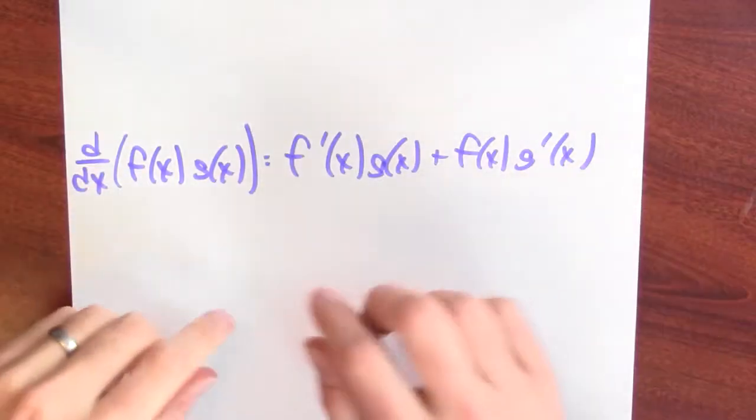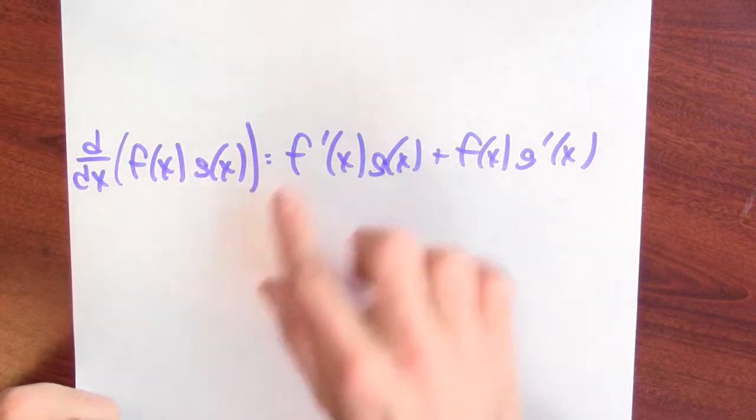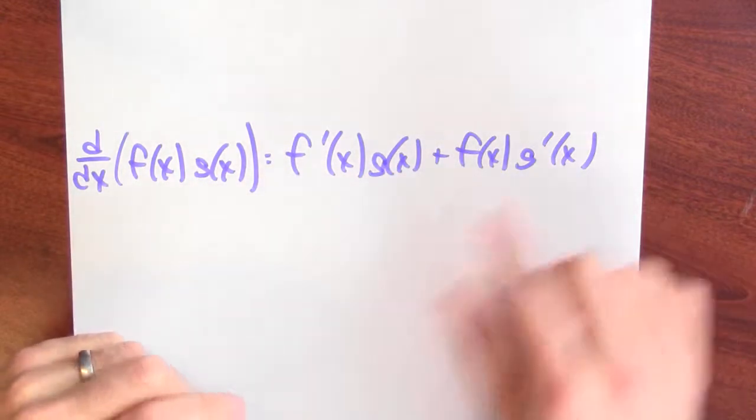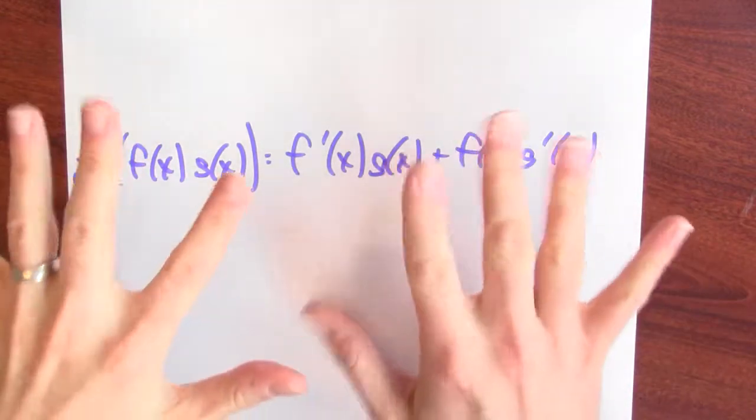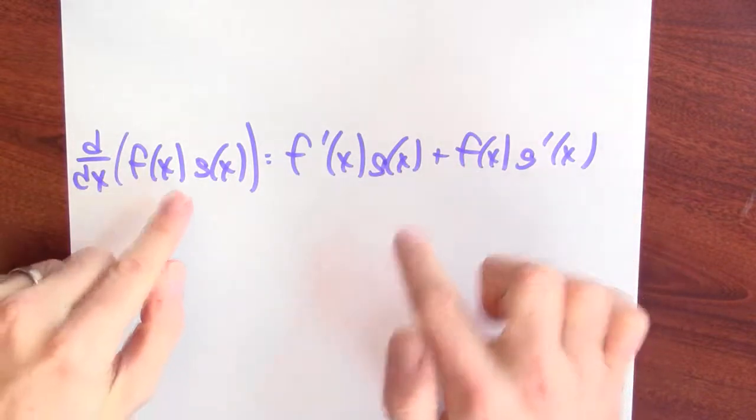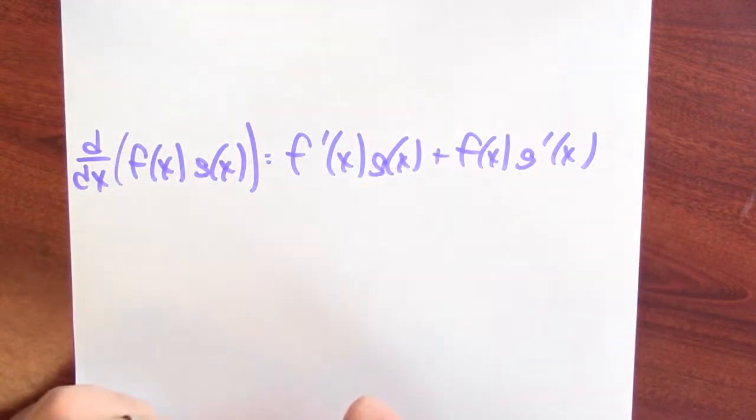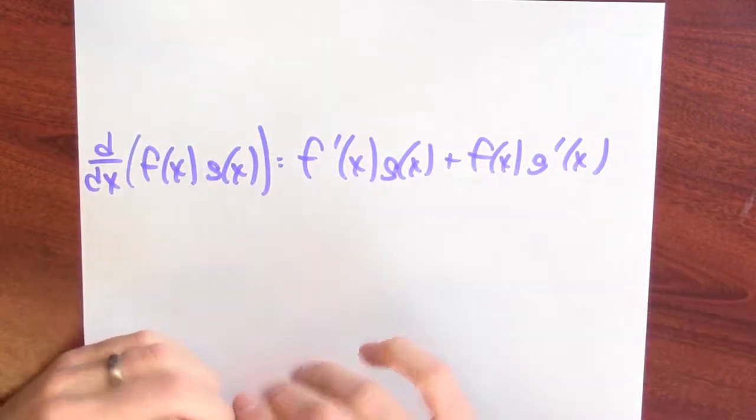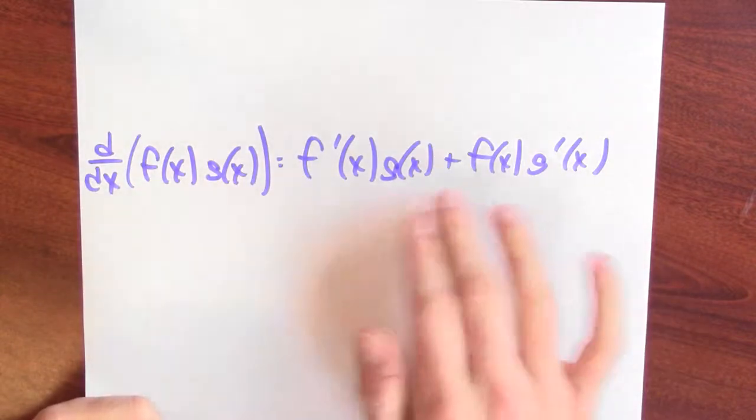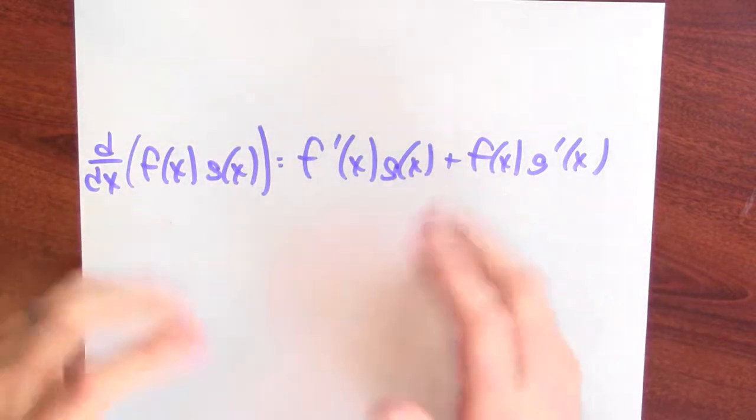Remember back when we talked about the product rule? The derivative of f times g is the derivative of f times g plus f times the derivative of g. It's a little bit mysterious considering the product rule has a plus in it. But we proved this previously just by going back to the definition of derivative in terms of limit and calculating the necessary limit to show that this product rule was in fact valid.